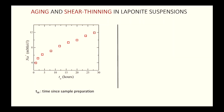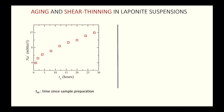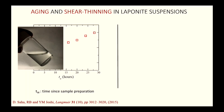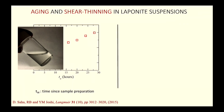Because of negative faces and positive rims, clay particles can form house-of-cards structures that percolate through the entire sample — this is what we call a gel. Sodium ion concentration measurements with a sensor over 28 hours show sodium ions gradually diffusing out into the suspension, confirming the ongoing structural evolution.